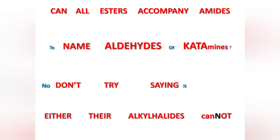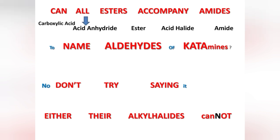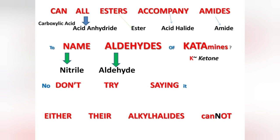Take notice of the two-letter words — they are not actually part of the mnemonic; they're just here to make the sentences complete and do not correspond to any functional group. Now let's link the various functional groups to each word of the mnemonic: 'Can' corresponds to carboxylic acid, 'all' to acid anhydride, 'esters' to ester, 'accompany' to acid halide, and 'amides' to amide. Then 'name' corresponds to nitrile, 'aldehydes' to aldehyde. For 'ketamines,' it's an abbreviation where 'K' = ketone, 'A' = alcohol, 'T' = thiol, and 'amines' = amine.